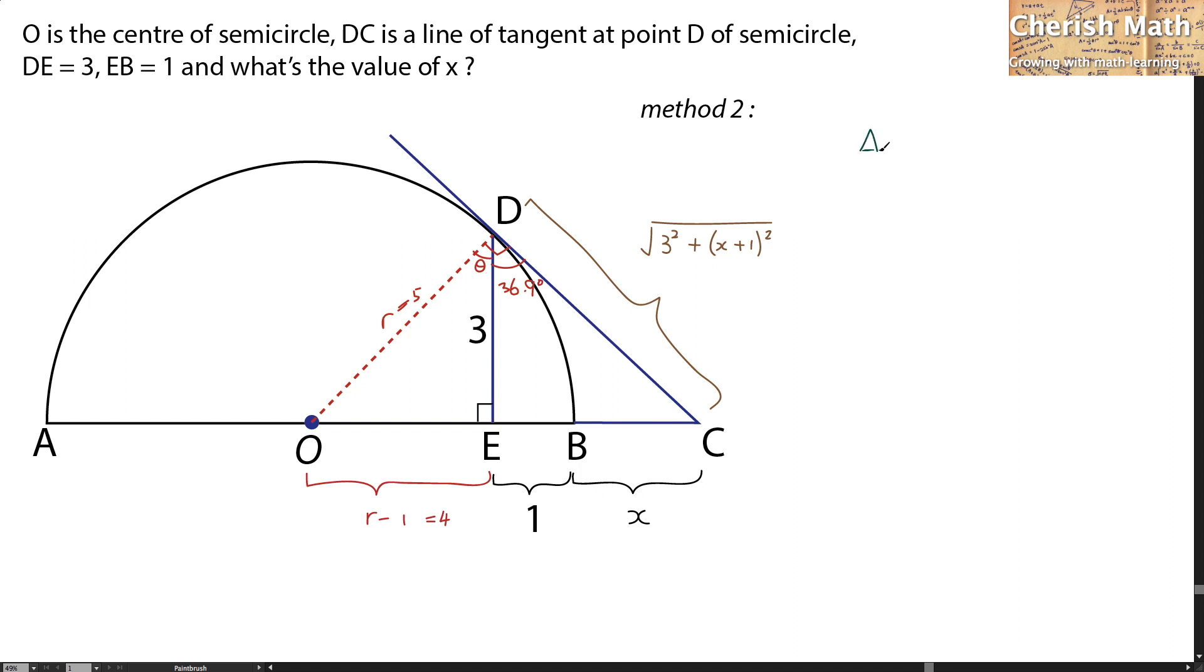We are now referring to triangle ODC. According to this triangle, OC is in fact the hypotenuse of this triangle, and the side lengths are 5 units and the square root of 3 squared plus x plus 1 squared. Now I'm going to form it by using Pythagorean theorem again. The entire length of OC is 4 plus 1 plus x, that will be x plus 5.